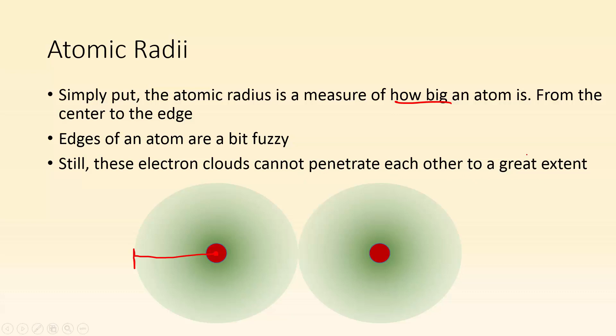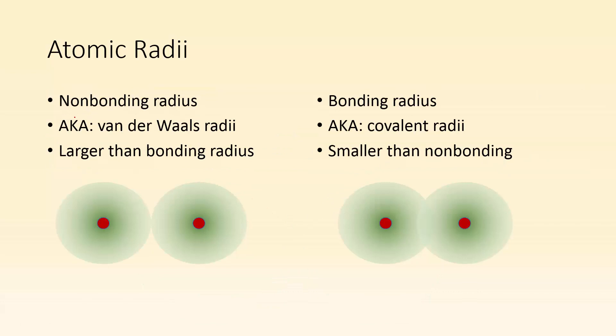We're going to talk about different kinds of atomic radii. We got the non-bonding radius, sometimes also referred to as the van der Waals radii, and it's larger than the bonding radius. Basically, if we push these atoms together, how close can we get them? That distance between the nuclei is the atomic radius. Then there's also the bonding radius, sometimes called the covalent radii, and it's smaller than the non-bonding. Because they're sharing some space and electrons, so those nuclei end up closer. So the midpoint is going to be slightly smaller. That's the bonding radii.